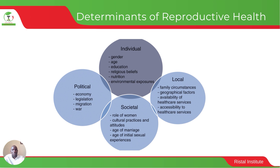Reproductive health is influenced by a number of factors, which we can call the social determinants of health. These factors can be categorized into four categories. First, individual factors — those acting at the individual level — include gender, age, education, religious beliefs, nutrition, and environmental exposures.